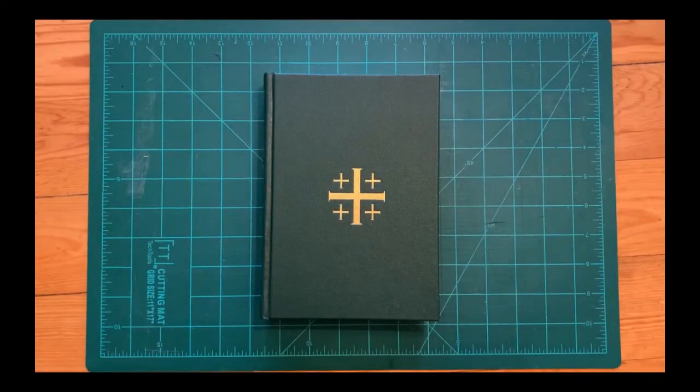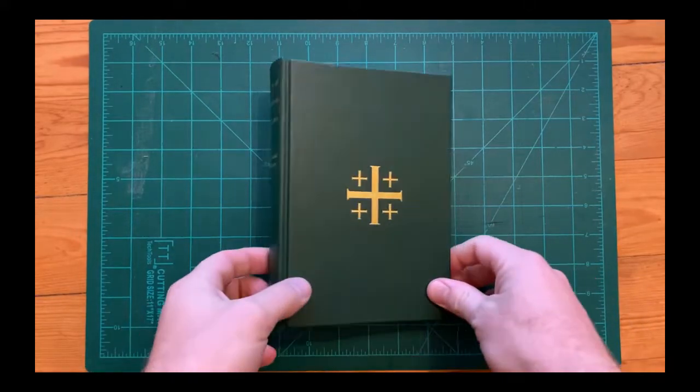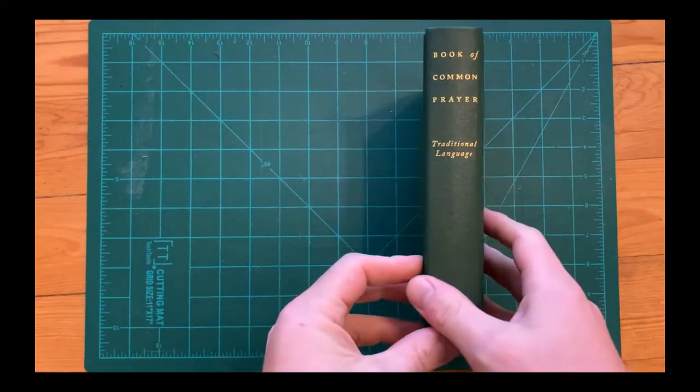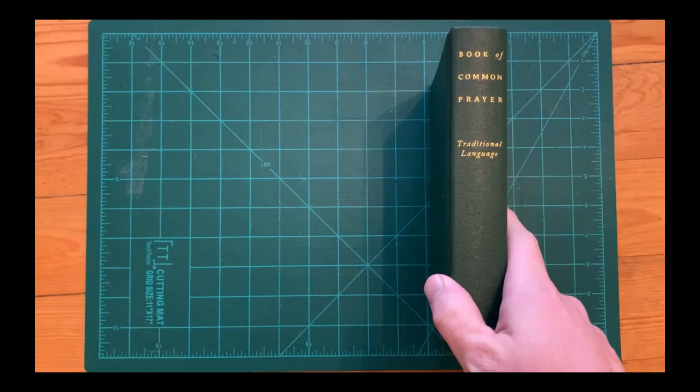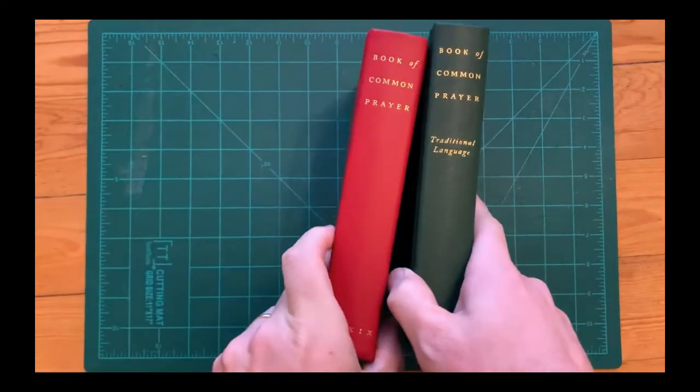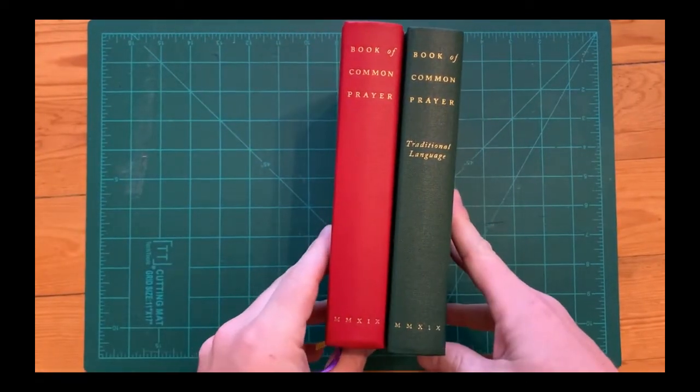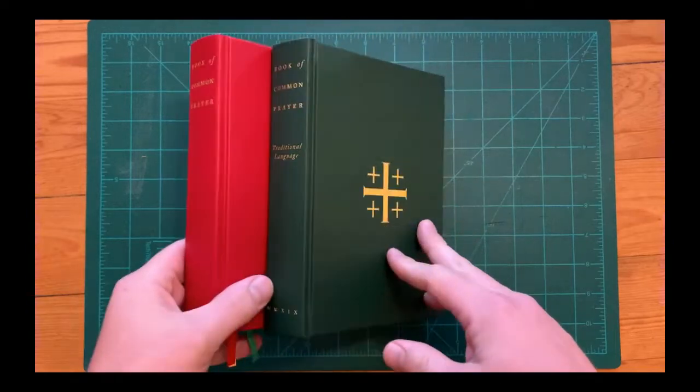This is the latest release from Anglican Liturgy Press. It's the Book of Common Prayer 2019 Traditional Language Edition. It is the same size as the standard pew edition of the Book of Common Prayer, but you'll notice obviously the different color.